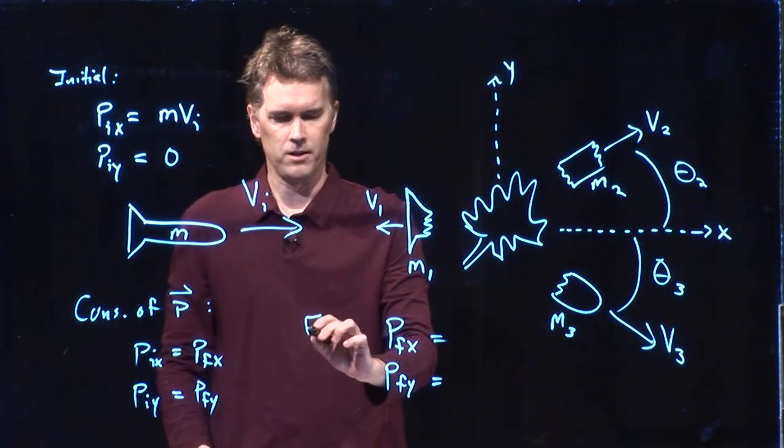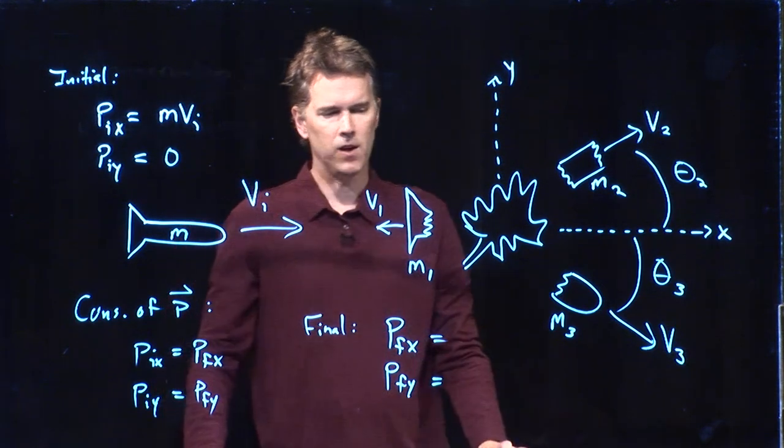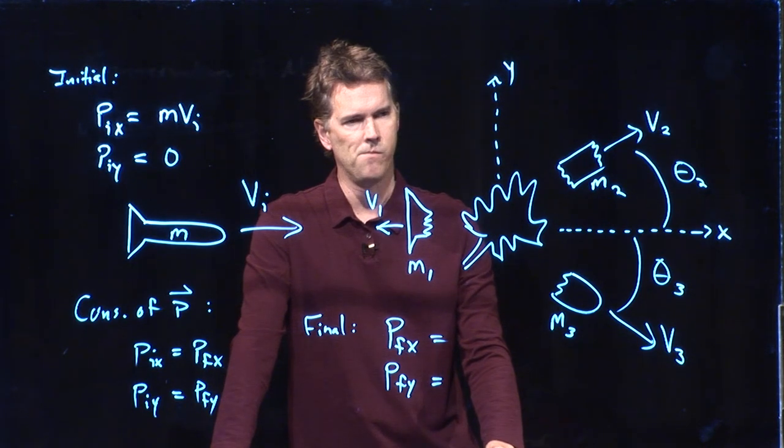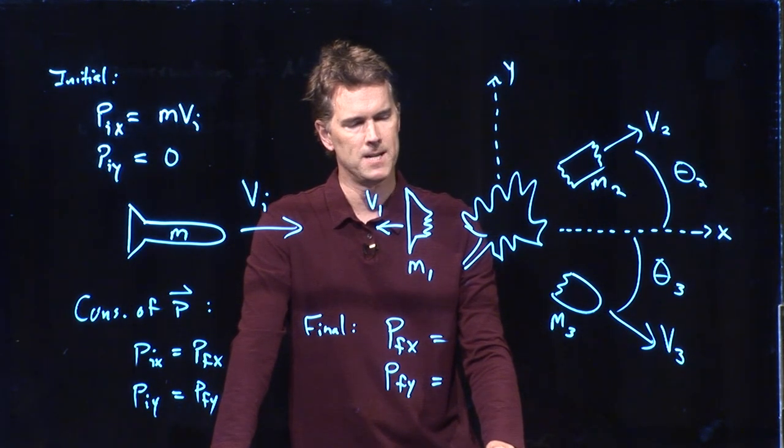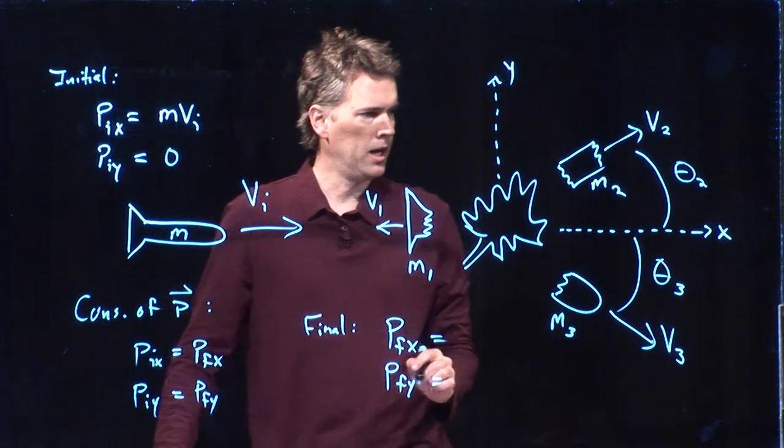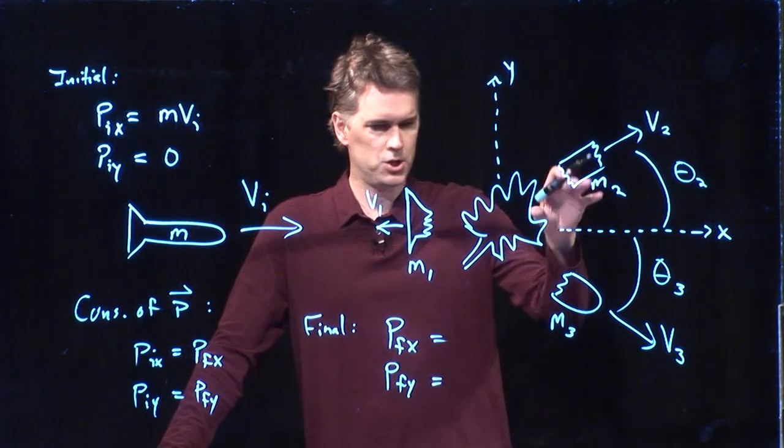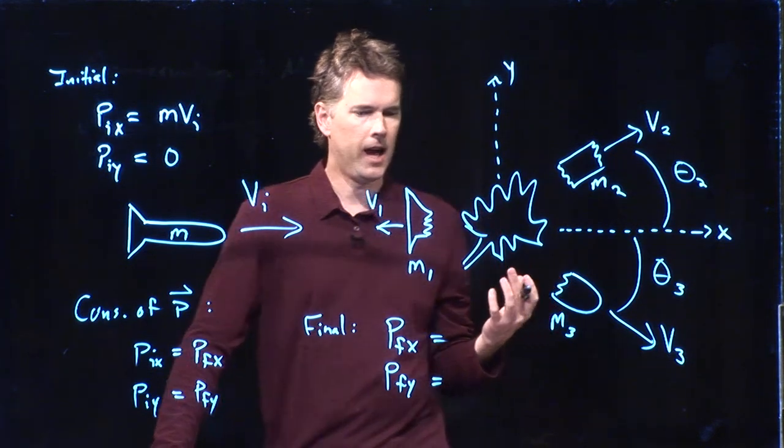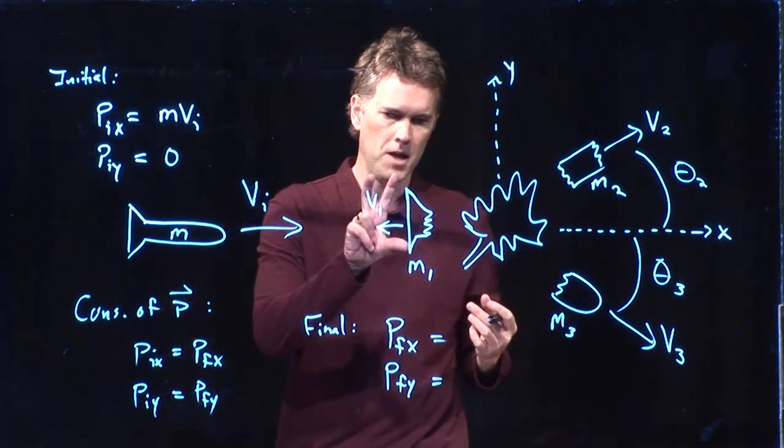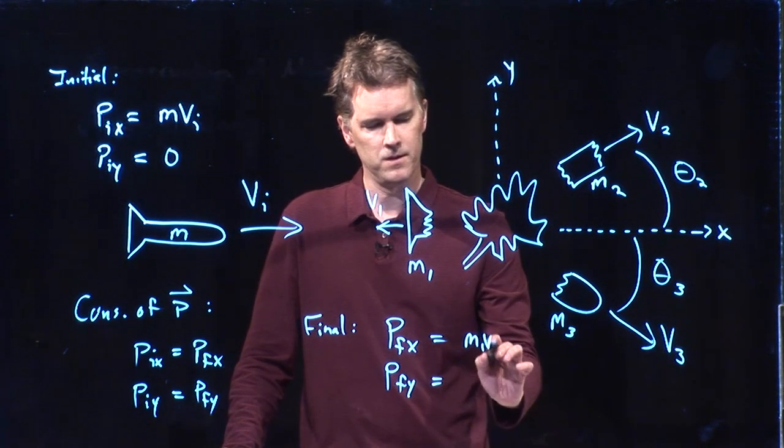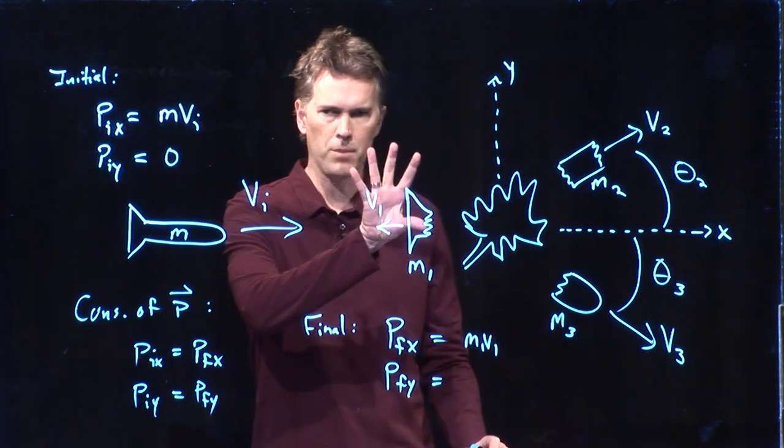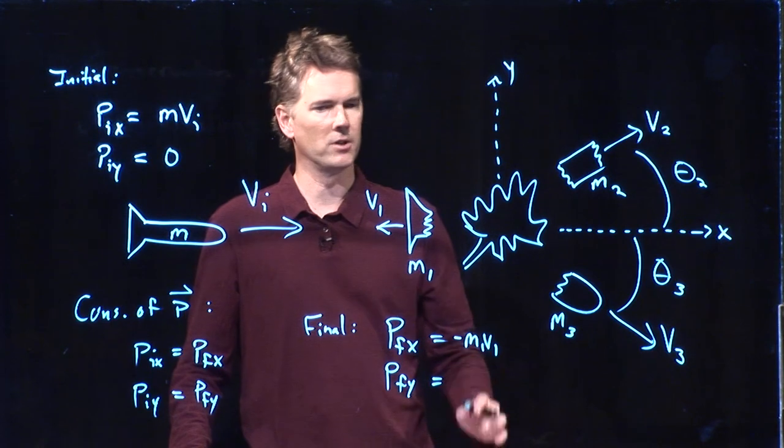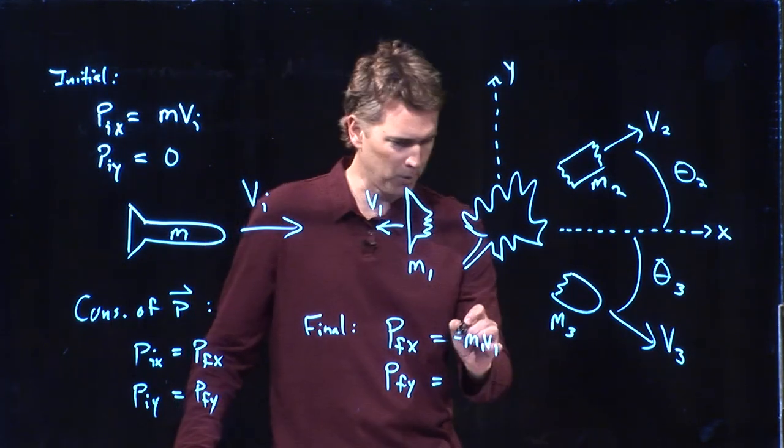And now down here, we're going to write the final conditions. And then we'll worry about setting them equal and solving. What do I do? p final in the x. It looks like I have one, two, three components that are going to have some contribution in the x direction. And we'll just go through them one at a time. m1, v1 is this guy right here. But it's heading in the negative x direction, and so I put a negative sign in front of it. This is always a velocity, so the direction is negative.